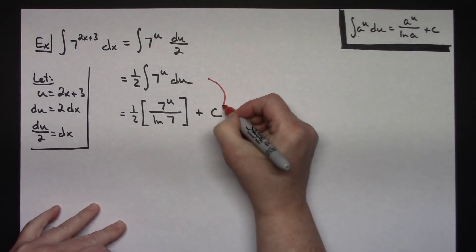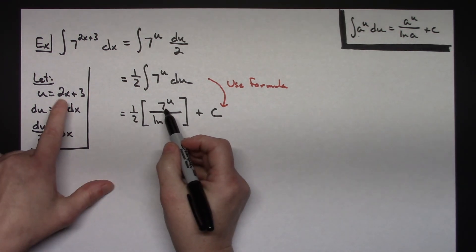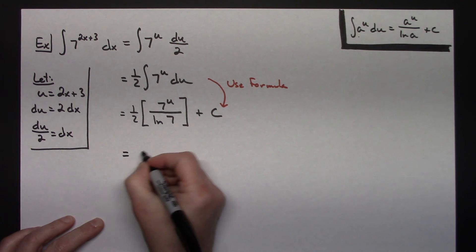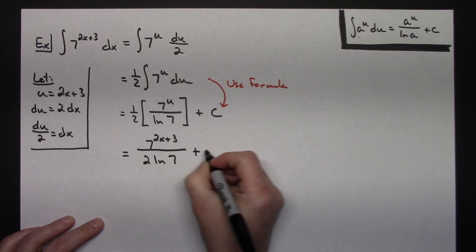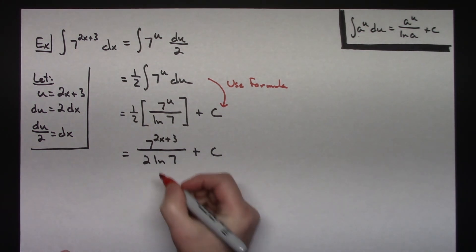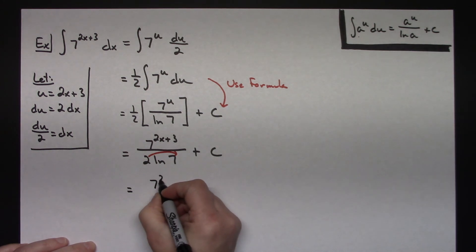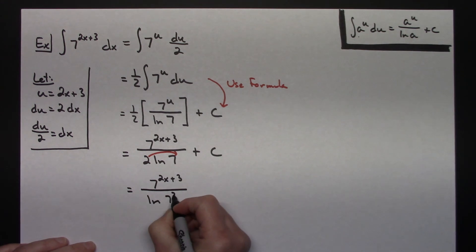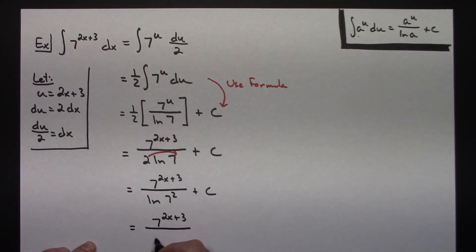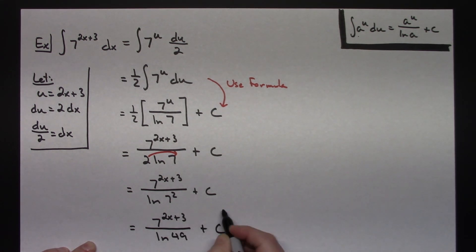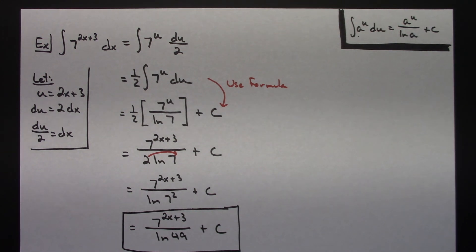Now substituting back in what u is and multiplying the 2 in, I'll have 7 raised to the 2x plus 3 all over 2 natural log of 7, plus c. Remembering some laws of exponents, we can clean up the answer a little bit: 7 raised to the 2x plus 3 all over natural log of 7 squared. And squaring that out gives 7 to the 2x plus 3 all over natural log of 49, plus c — the final answer. So those are three examples of using your integration formulas for exponential functions.